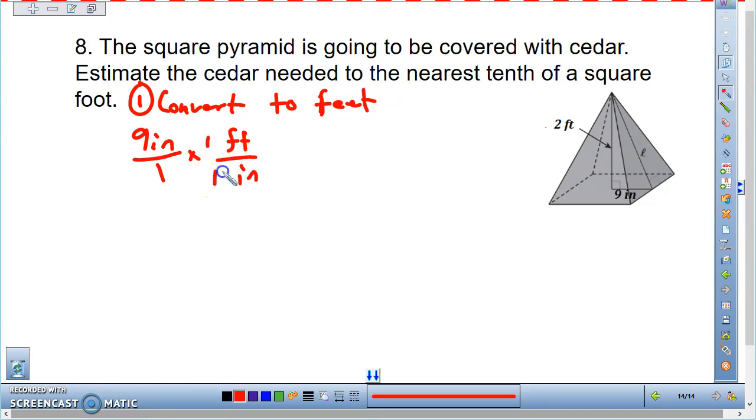One foot per 12 inches. When you calculate this, you should get 0.75 feet. So I'm going to cross this out. That is 0.75 feet.